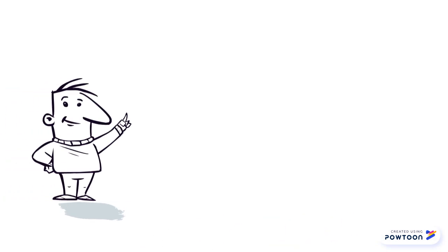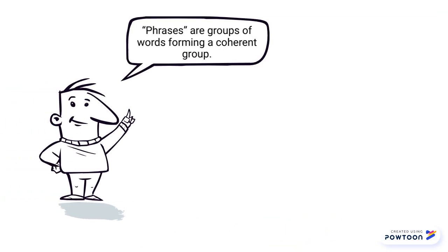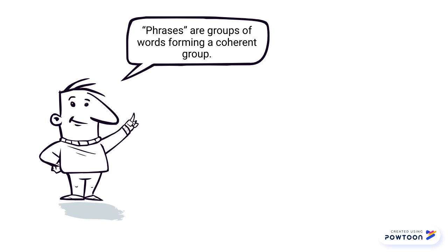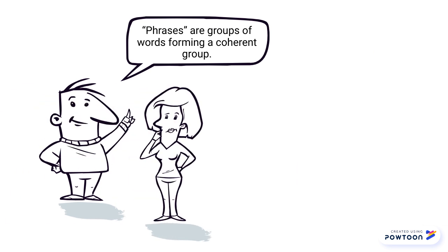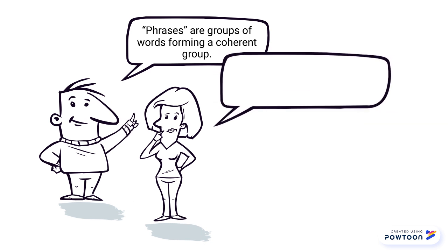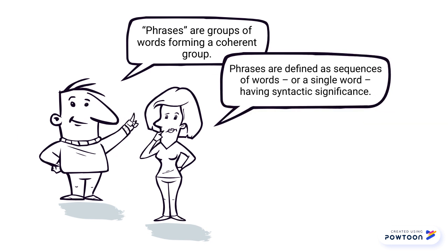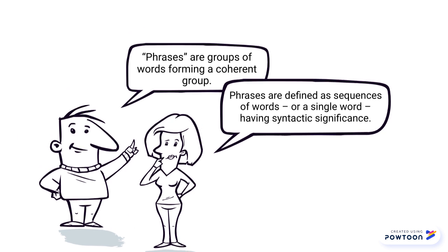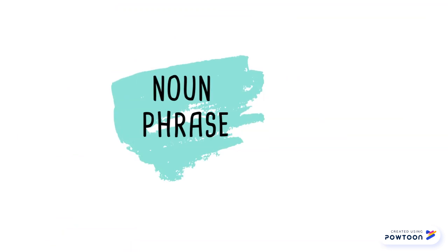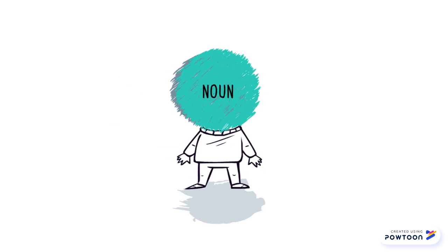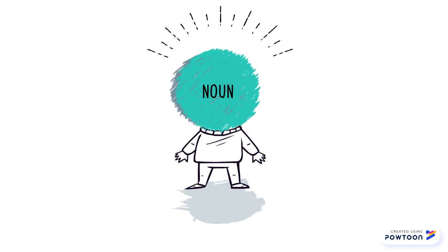Meanwhile, in traditional grammar, phrases are a group of words without subject and predicate forming a coherent group. In generative grammar, phrases are defined as a sequence of words or a single word having a syntactic significance — that is, they form a constituent. Knowing that, a noun phrase is a phrase that has a noun as its head and can be expanded in many different ways.